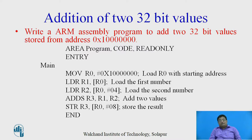The AREA directive is used to assign read-only memory space for the instructions. 'Program' is the identifier used as a reference for other programs. The ENTRY directive is used to specify the start of the main program. The first instruction is MOV R0, #0x1000000, which is used to load R0 with the starting address.